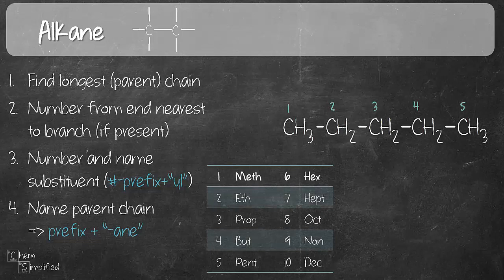All right, so looking at our parent chain, we have five. So five, the prefix is pent, P-E-N-T. And then we're going to add in A-N-E, and that is to represent alkane. So all in all, the name for this compound is pentane. So P-E-N-T for the five carbon, A-N-E to represent alkane. Pretty simple, right?